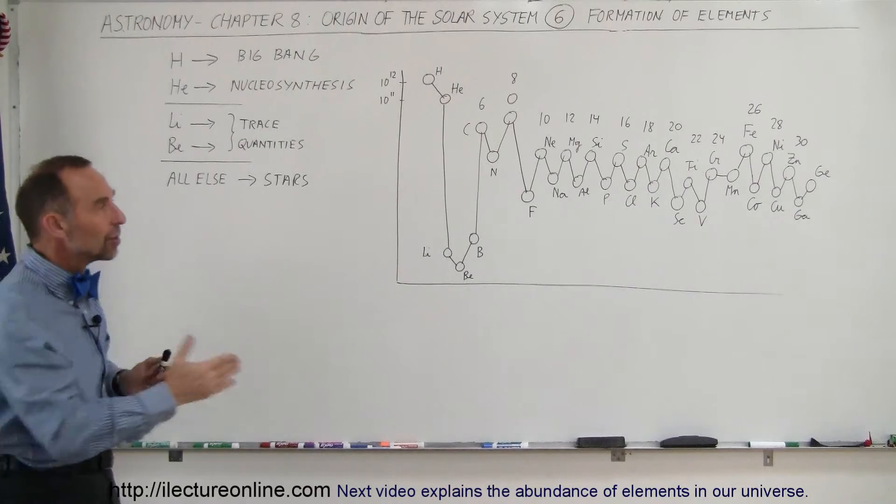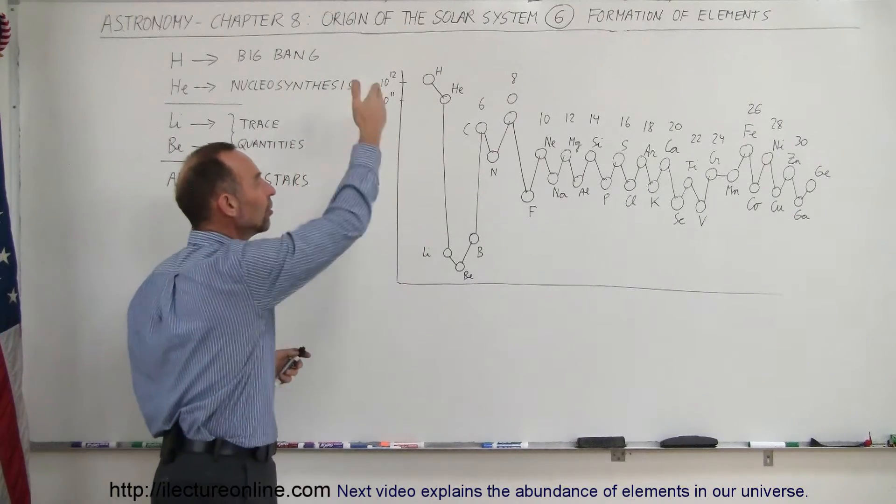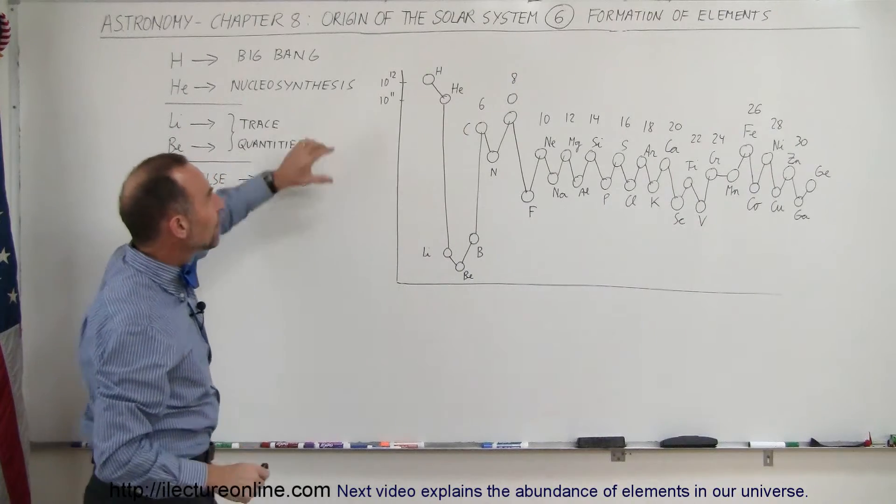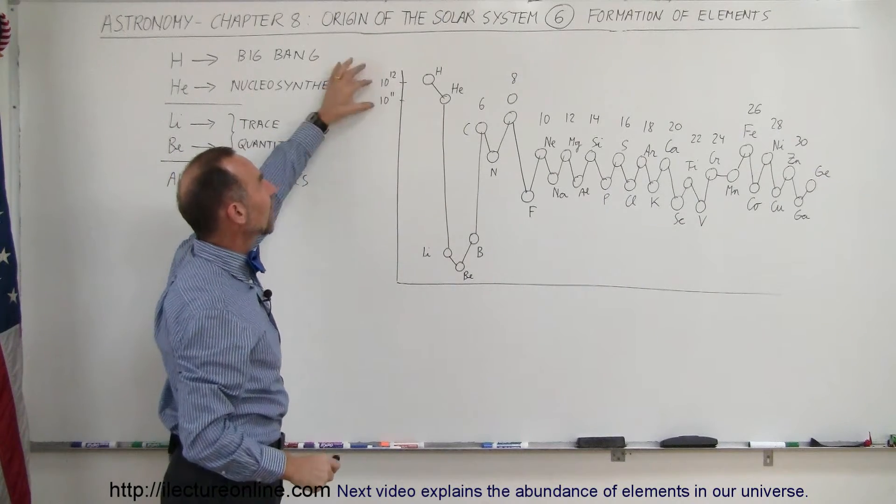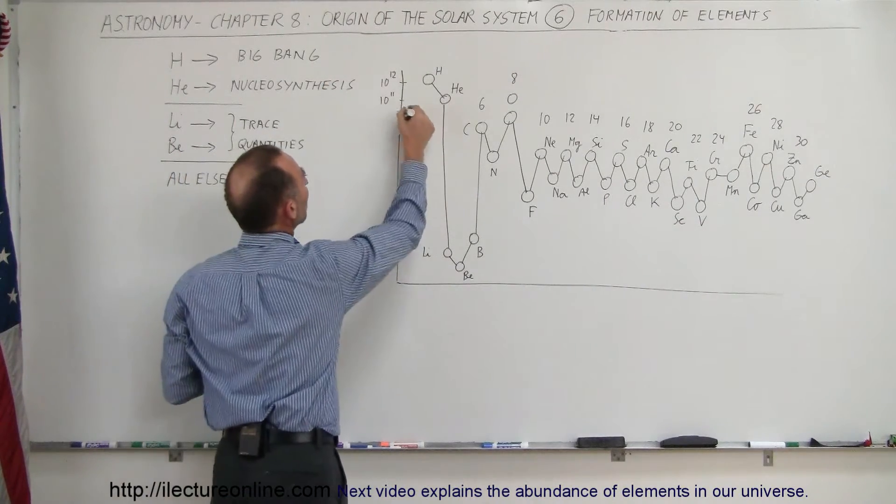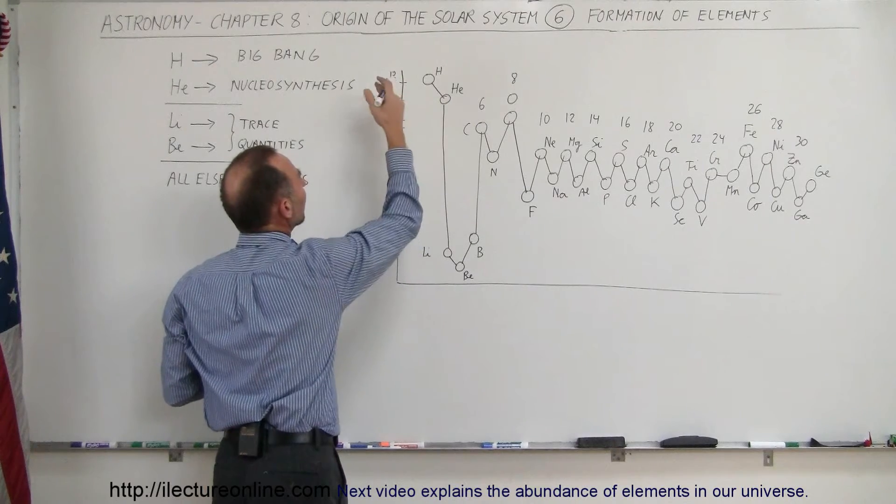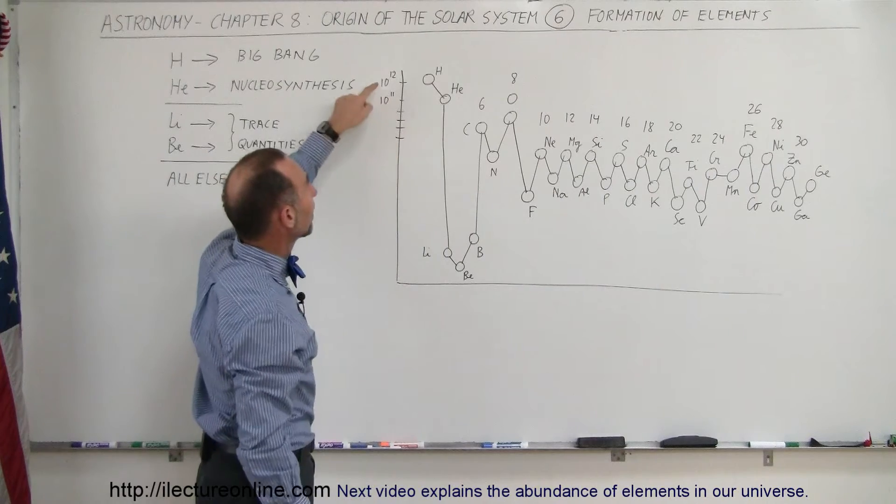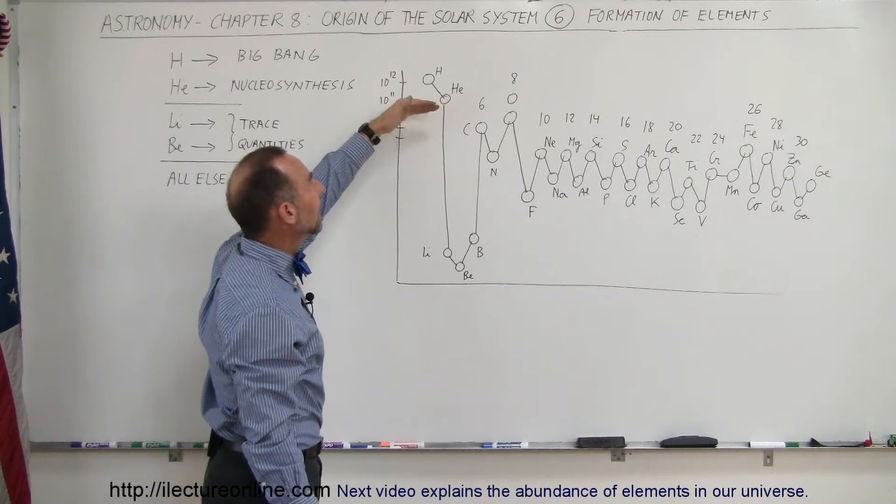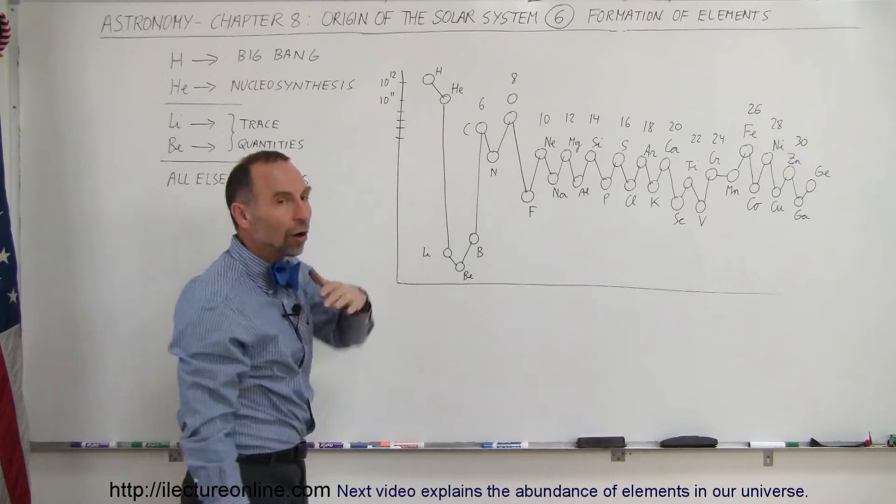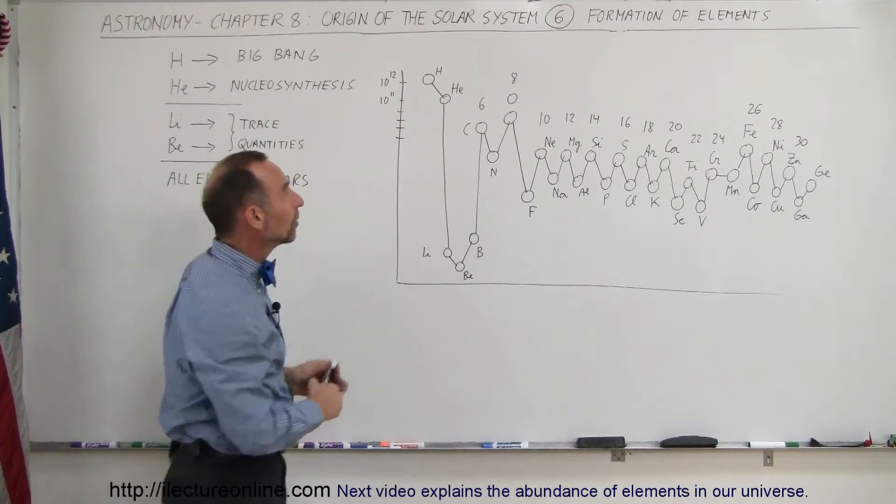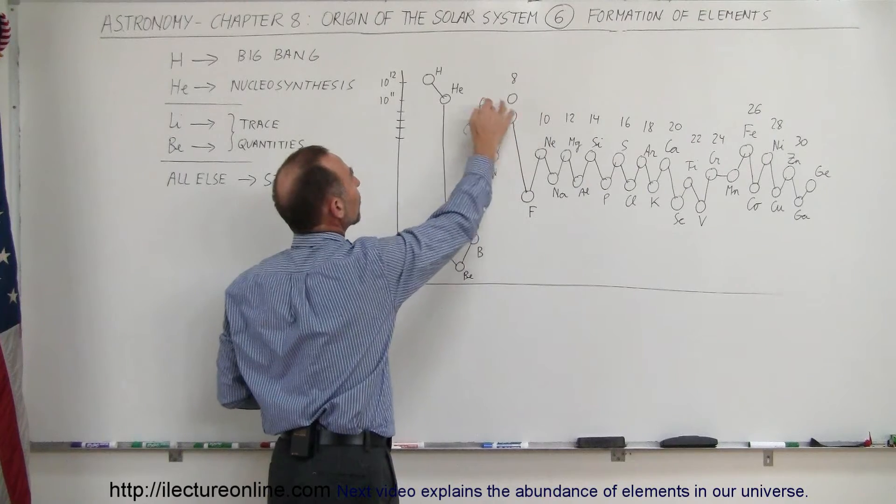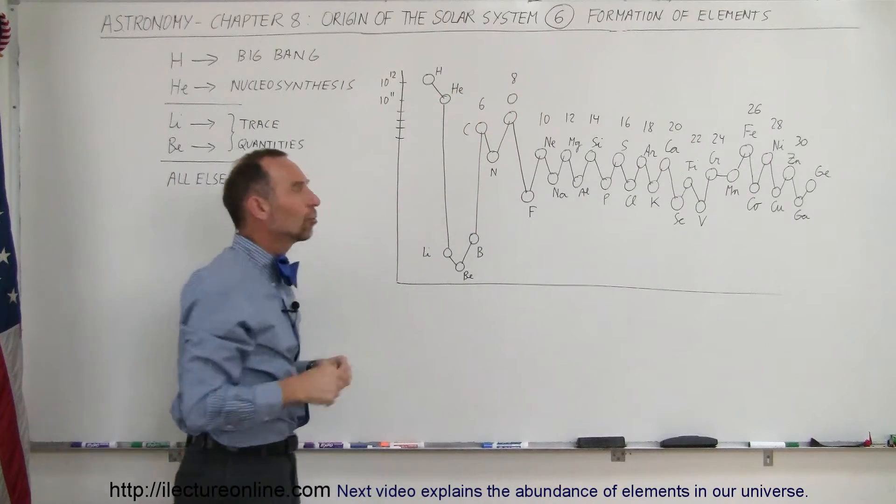When we take a look at these elements and we chart them in terms of abundance versus the atomic number and keeping in mind that this is a logarithmic scale, for example, every mark here is 10 times less than the mark before we can see that there's about 10 times as much hydrogen as there is helium and then the elements after that are in existence in a much lower abundance. For example, there's only about 1/100 times as much oxygen as there is helium and so forth.